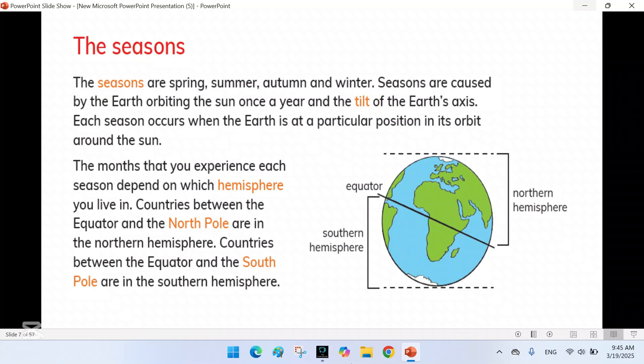In the northern hemisphere, summer occurs around June when it is tilted towards the sun, while winter happens in December when it tilts away.